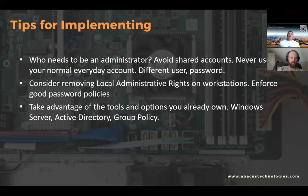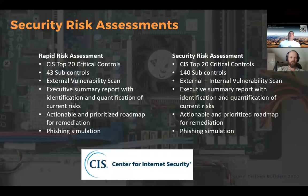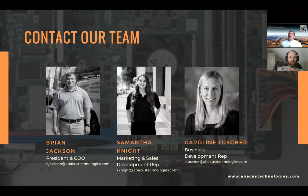Hopefully these are some tips you can use — all of these apply to the CIS controls we covered today, whether controlling administrative access, secure configuration, or inventory of your hardware and software. We use the top 20 controls in our security risk assessments. We have a rapid risk assessment that touches all top 20 controls, sub-controls, and vulnerability scans along with it, as well as a more comprehensive full security risk assessment. If you're interested, please let us know. You can get in touch with us via email, reach out to Samantha or Caroline, or call us at 205-443-5900.